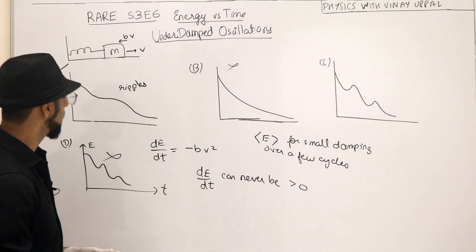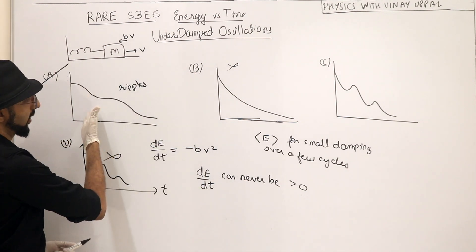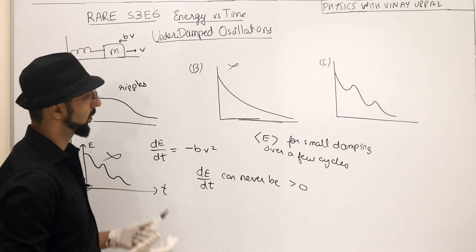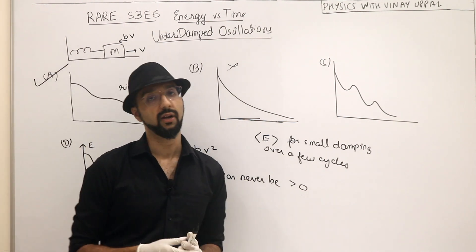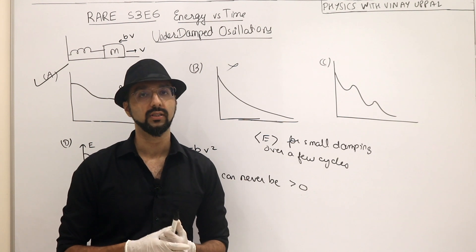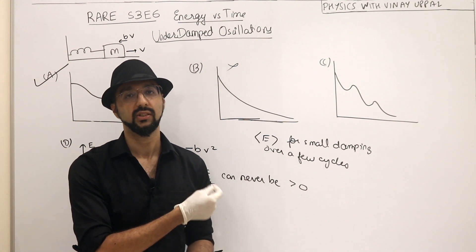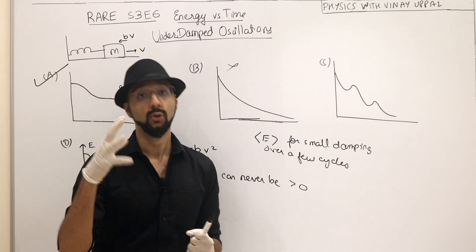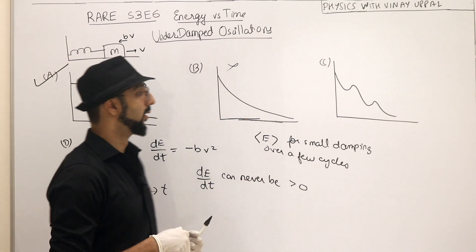I am asking the instantaneous mechanical energy. If someone says energy, it is always the instantaneous energy. This exponential decay, that is for the average energy averaged over a few cycles. So I hope it is clear that this should be the correct answer. So I hope you will be able to do it in JEE advance. It should be free marks for you in JEE advance. Then as a basic question, definitely they can ask for the new syllabus that they have added.